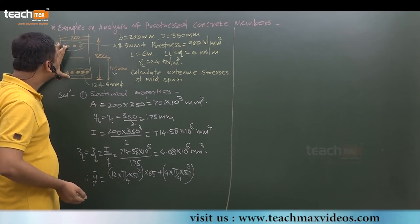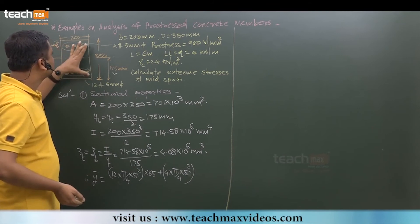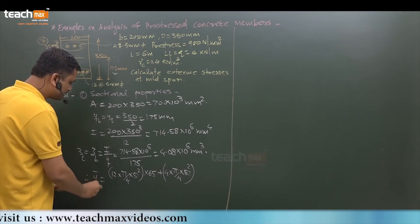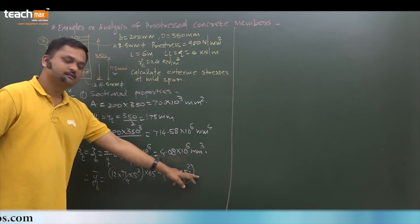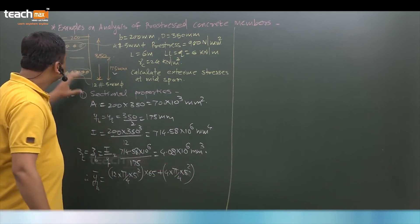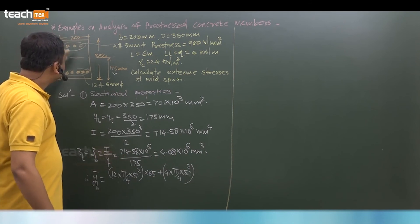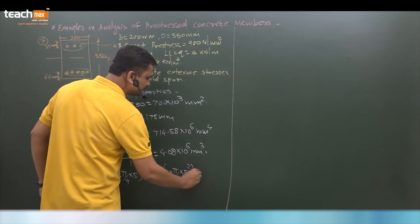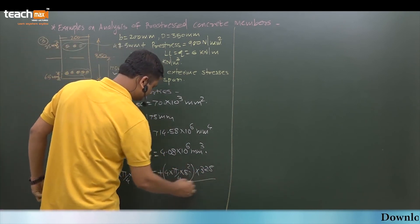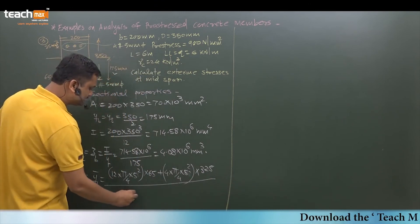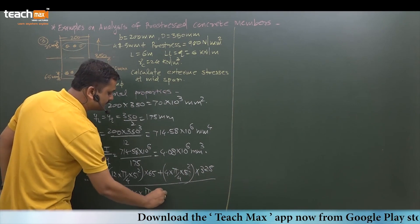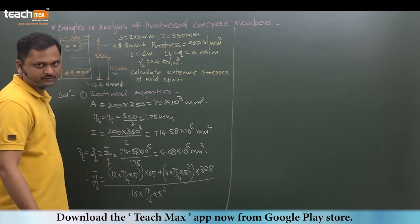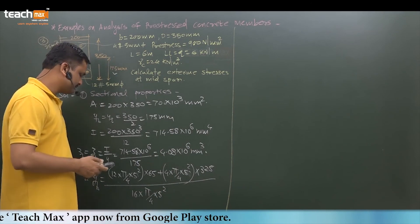It is multiplied by distance from soffit, which is 350 minus 25, which equals 325. We are finding y bottom, so from bottom we have to take these y1 and y2. This total will be divided by 16 wires of 5mm: 16 times pi by 4, 5 squared.